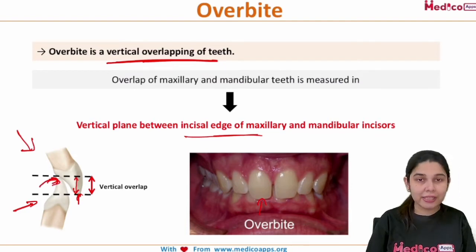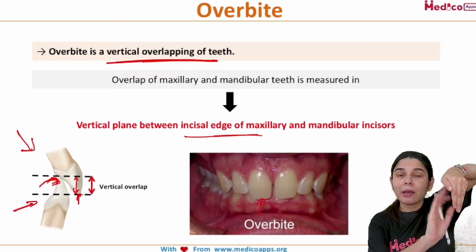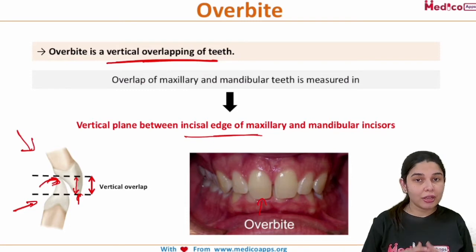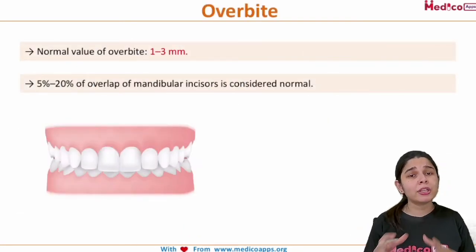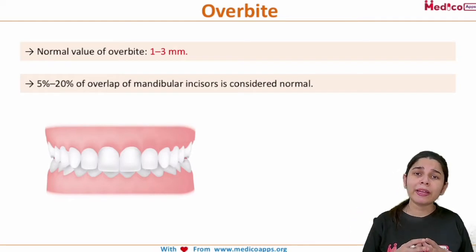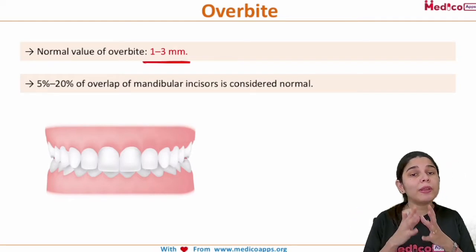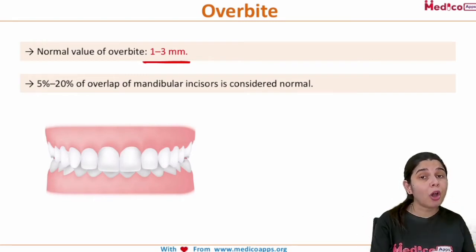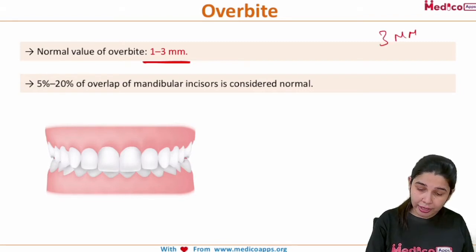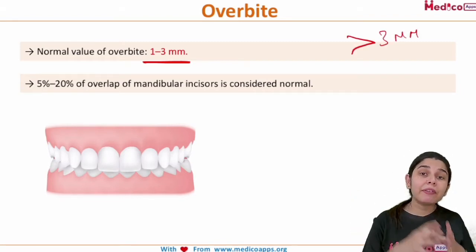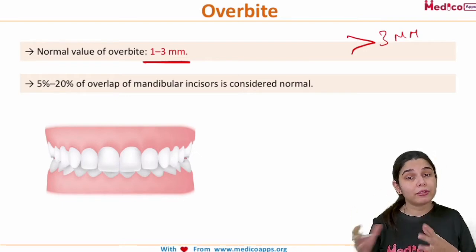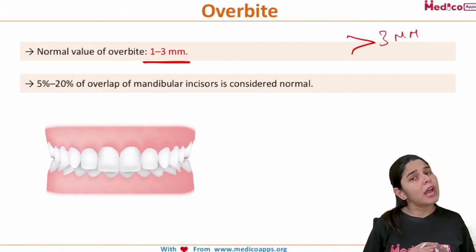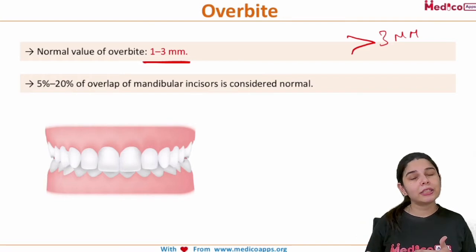This is the incisal edge of the mandible — whenever there is vertical overlapping of the teeth it is known as overbite. The normal range is between 1 to 3 mm. If it goes beyond 3 mm, the case is considered an overbite. Five to twenty percent overlap of the mandibular incisors is considered normal; more than this is considered an abnormal overbite.